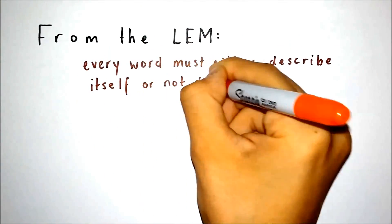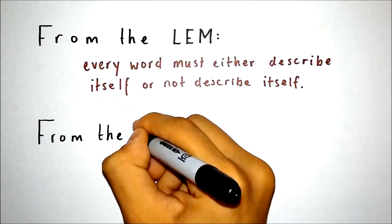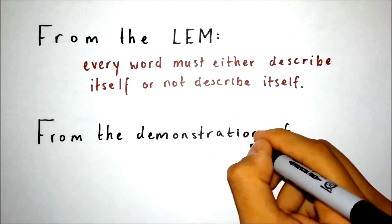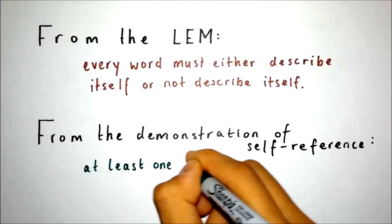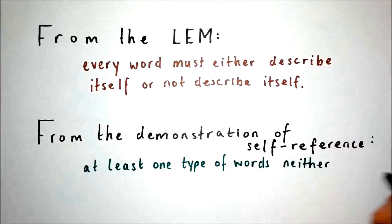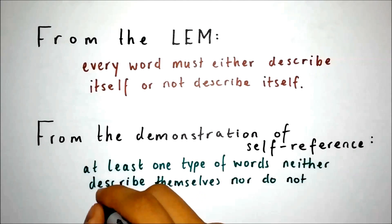We are led to two options. First, we have somehow misdefined the word heterological. And second, that the law of excluded middle is false. You will find that it is impossible to make an argument for the former. So we must conclude that the law of excluded middle is indeed false. We have just broken philosophy.